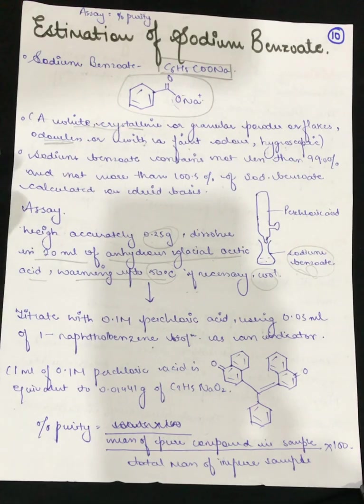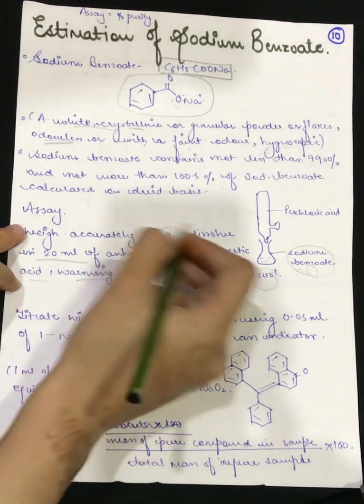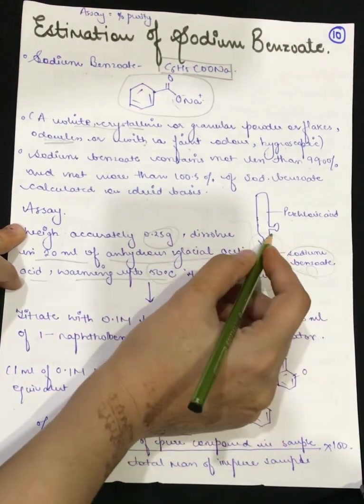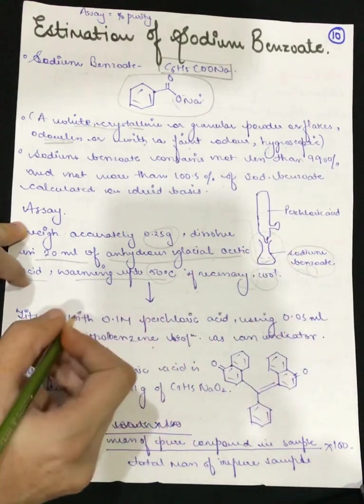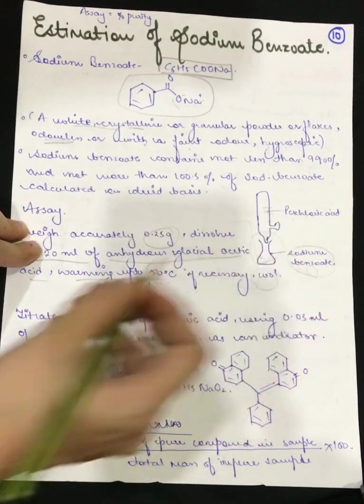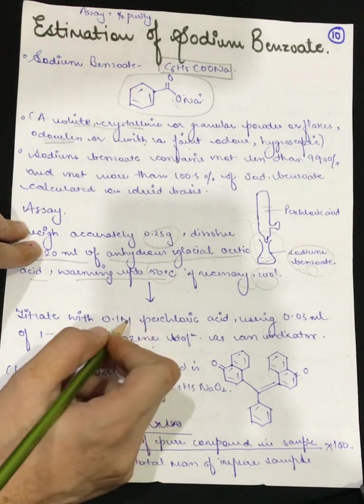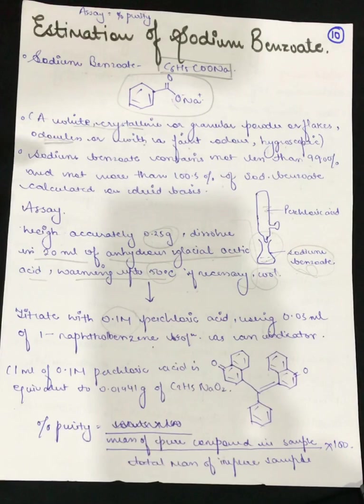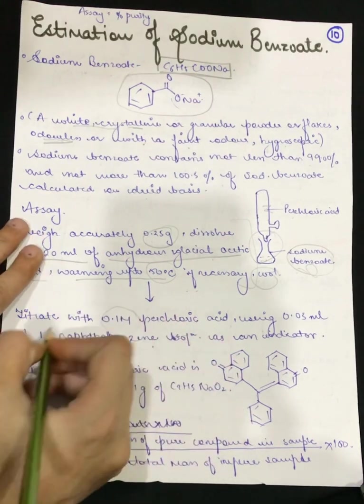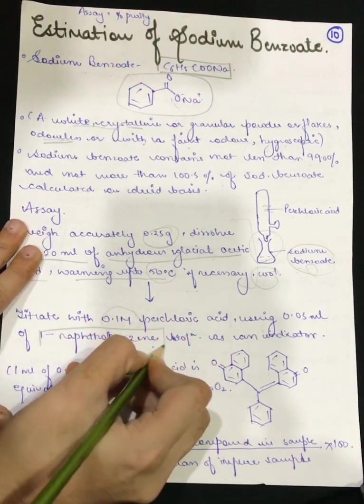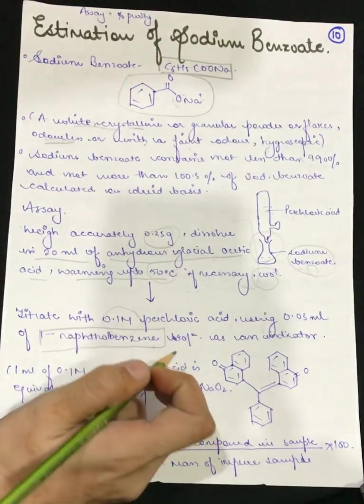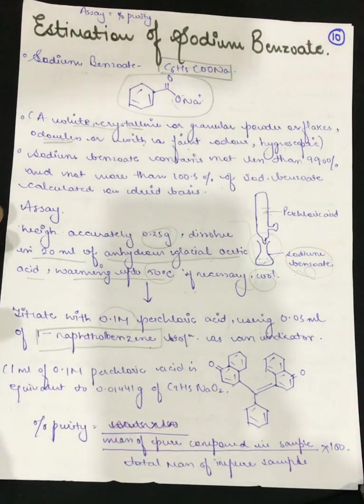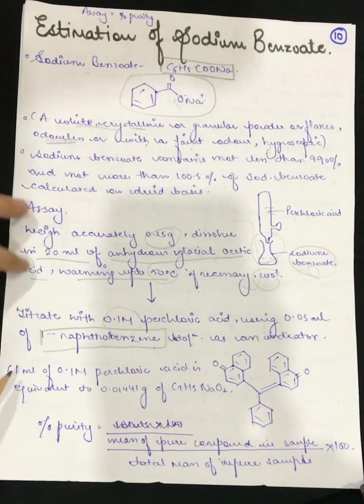We will put our preparation in the conical flask. Then we will titrate our solution against perchloric acid which will be 0.1 molar. We will use an indicator. The indicator that we have used is 1-naphthol benzene solution.